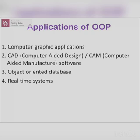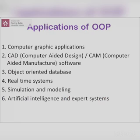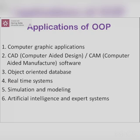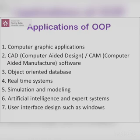The fifth application is simulation and modeling — simulation means imitation of a real-world product. The sixth is artificial intelligence and expert systems — artificial intelligence is a combination of both hypermedia and real-time systems. The last one is user interface design, such as Windows. These are some of the applications of OAPs.